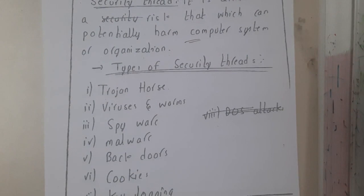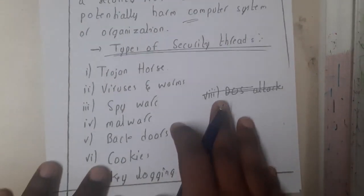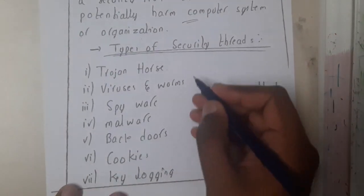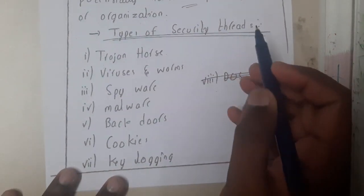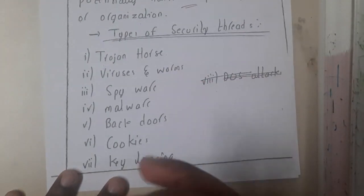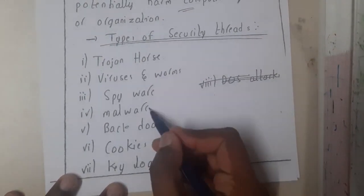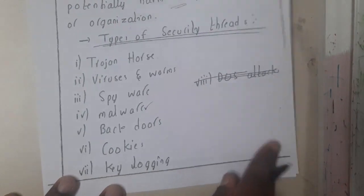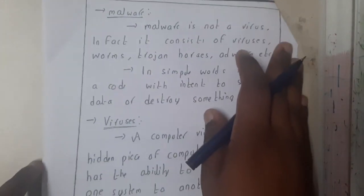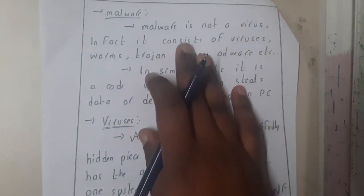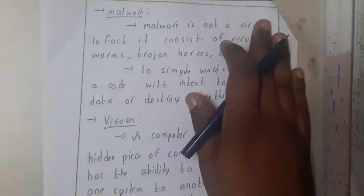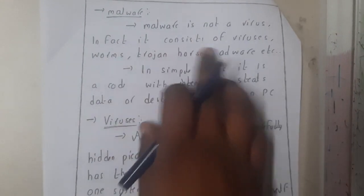Now let us go through the types of security threats. We have around seven types and we'll be discussing them one after the other. Let us start with malware first. Malware is not a virus — few might say that, but malware is not a virus.